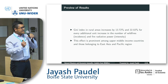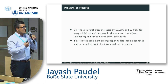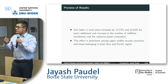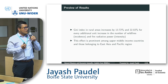Let me give you a brief preview of the results. The Gini index in rural areas increases by roughly 13.72% and 22.02% for every additional unit increase in the number of fire events and fire radiative power respectively. I also break down the sample into different groups and find that this effect is prominent across upper middle income countries and those belonging to the East Asia and Pacific region.